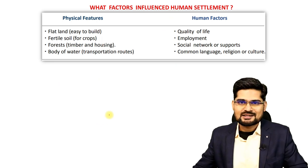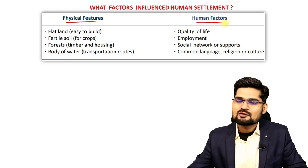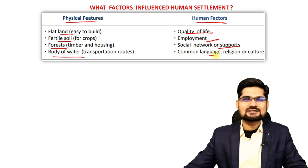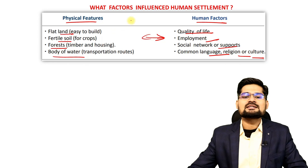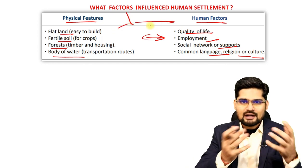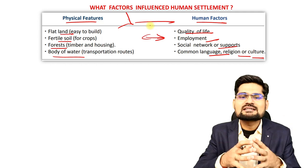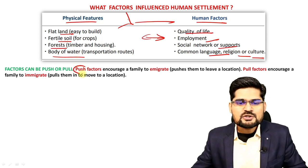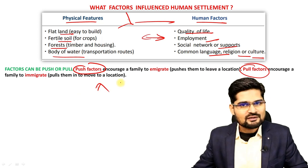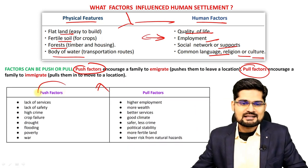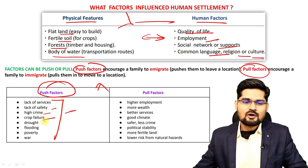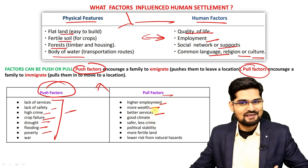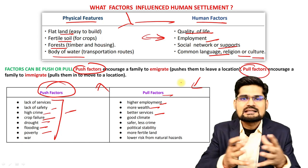The factors influencing decision-making for human settlements can be divided into physical factors and human factors. Physical factors include flat land, fertile soil, forests, and bodies of water. Human factors include quality of life, employment, social networks, common language, religion, and culture. These can also be divided into push factors — services, safety, crime, crop failure, drought, flood, and poverty — and pull factors — employment, wealth, and services.